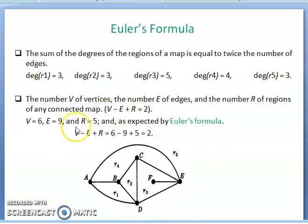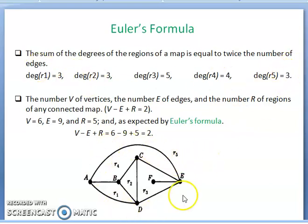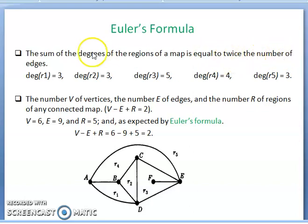The sum of all degrees is 18, which is twice the number of edges. There are 9 edges, and 2×9 = 18. Both are the same, confirming that the sum of degrees of regions of a map equals twice the number of edges.